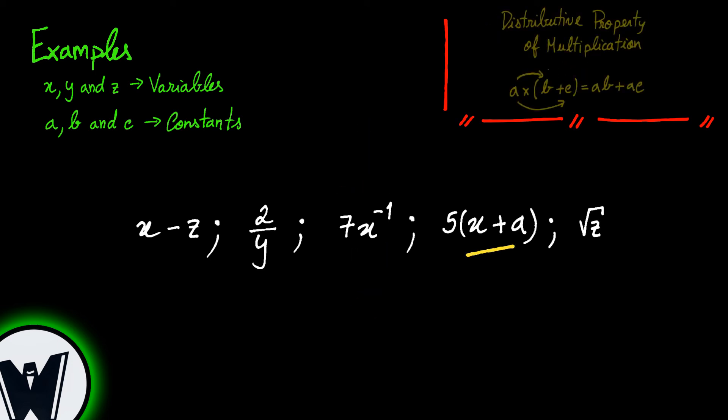In this example, using the distributive property, it will result in the sum of a variable and a number which isn't a monomial.